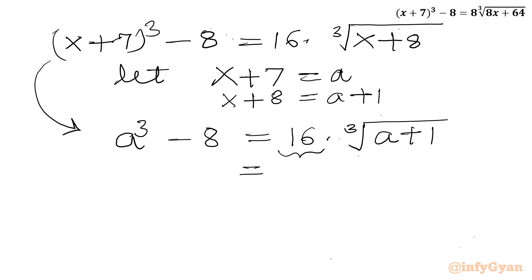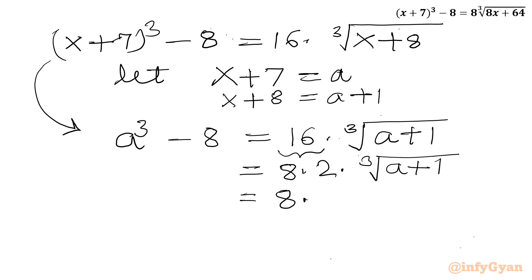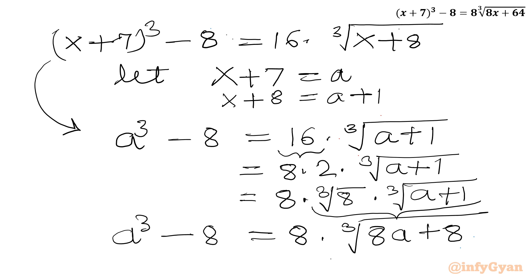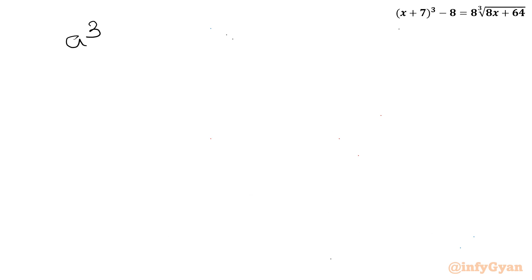We can split 16 as 8 × 2, and write 2 as cube root of 8. Combining, the right-hand side becomes 8 times cube root of 8(a + 1) = 8∛(8a + 8). So our equation is now a³ - 8 = 8∛(8a + 8).